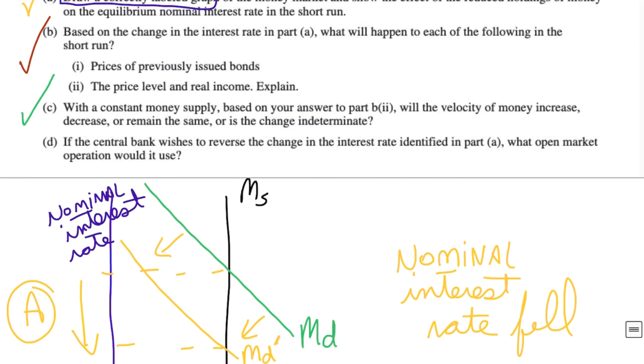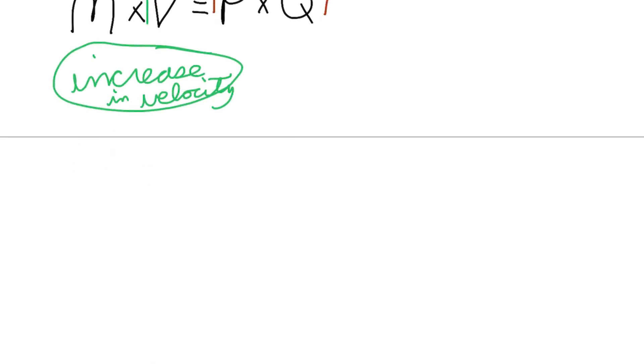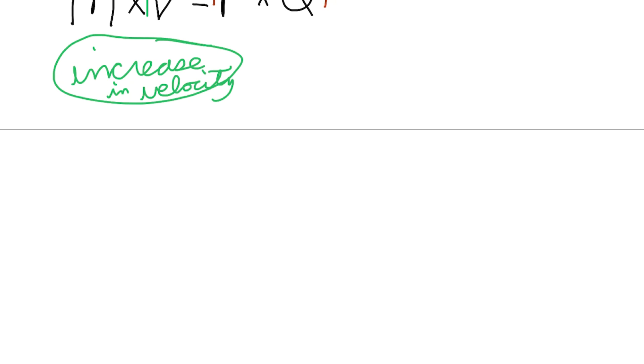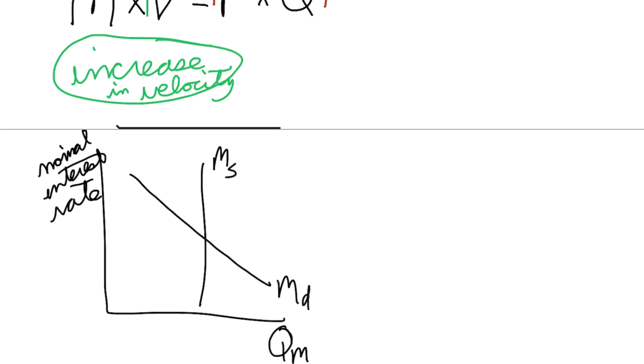And then finally, Part D. If the central bank is wishing to reverse the change in the interest rate that we had found in Part A, what open market operation would it use? So let's remind ourselves of what had happened. We had our quantity of money, we had our nominal interest rate, and that money demand had decreased as a result of people holding less cash, and we had seen that fall in the interest rate. Then the Federal Reserve, to counteract this, would actually have to reduce the money supply, because that's the only way I can then keep my interest rate the same or move it back up. So I would have to reduce the money supply.